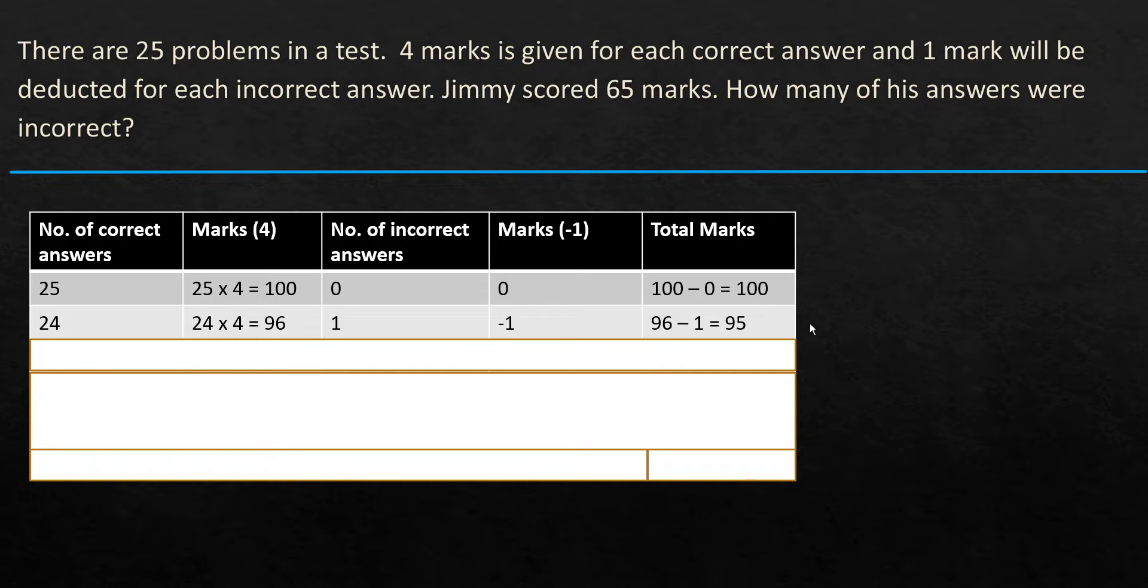So again, what we are going to do next is reduce it one more because we haven't yet reached 65. These numbers are way far beyond 65. So once we put 23 here, 23 times 4 equals 92 marks obtained, and there are two incorrect answers. So the marks deducted is minus 2. So 92 minus 2 gives 90.